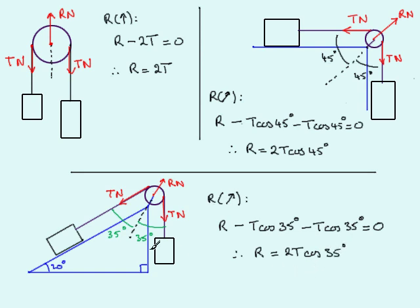All you need to do is substitute the value of tension found in an earlier part of the problem to get R. The magnitude of R is then 2T·cos35°, which represents the resultant force from the two tensions on the pulley. I hope these diagrams and examples are similar to the ones you might encounter in your exam.